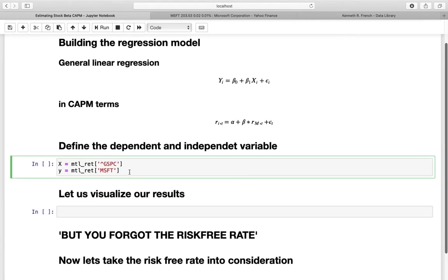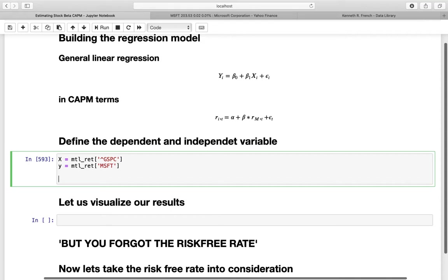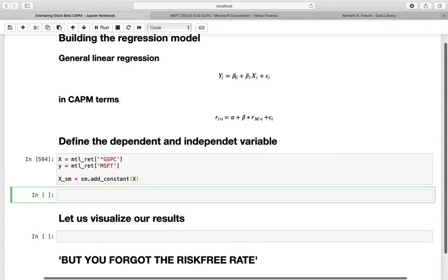And that's pretty much it. Now you have to know that when using the stats models API, you always have to add a constant. Why is that? Referring to the documentation of stats models, an intercept is not included by default and should be added by the user. So let's actually do that by defining a new x. Let's call that xsm. And then we are using the add constant function of sm and apply that to our independent variable here.